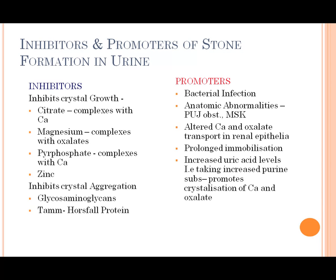Inhibitors work by inhibiting crystal aggregation, like glycos and aminoglycans. What are the promoters? How to promote and develop these conditions — bacterial infections, anatomical abnormalities like peptic disease, and also altered calcium and oxalate transport in renal epithelium. Prolonged immobilization and increased uric acid levels also promote stone formation.